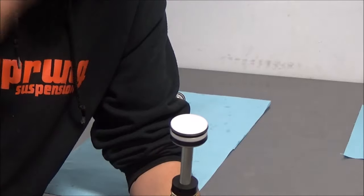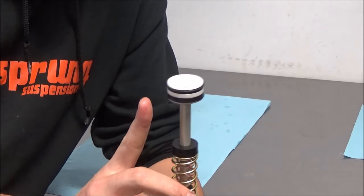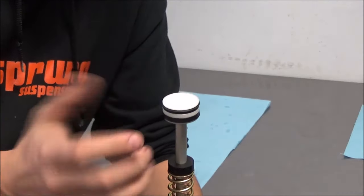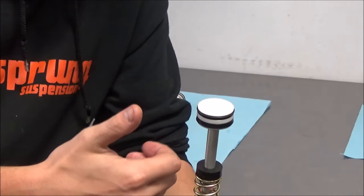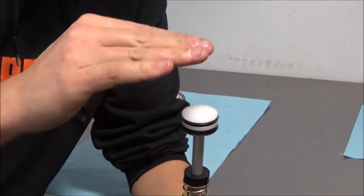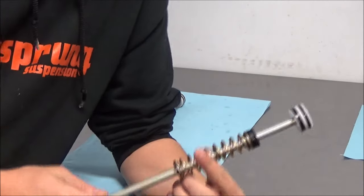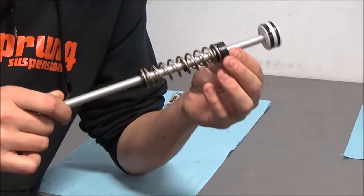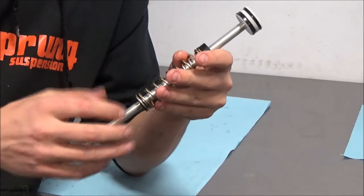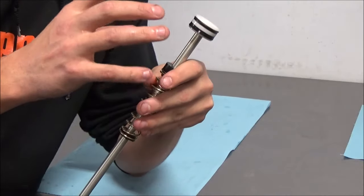And so what would happen when there was only the one U-cup, is that oil would essentially get up into the air chamber that wasn't supposed to be there from the lowers. So they'd have two negative effects. First of all, it would fill your air chamber up with oil, and particularly when people would only service the lowers of their fork, this created issues because it would mean that the lubrication on the lowers was now in the air spring.